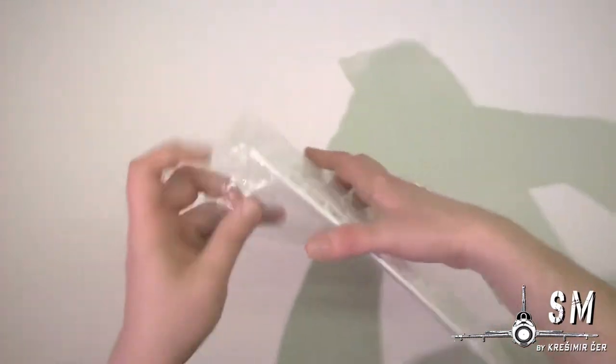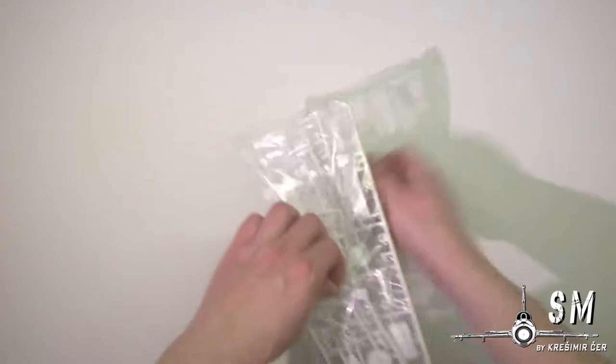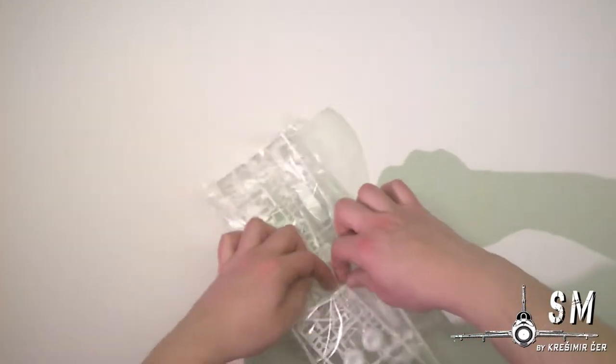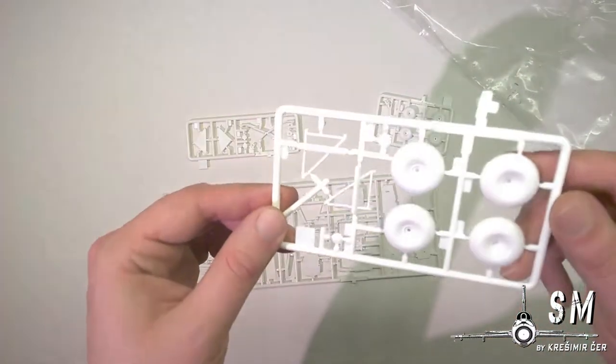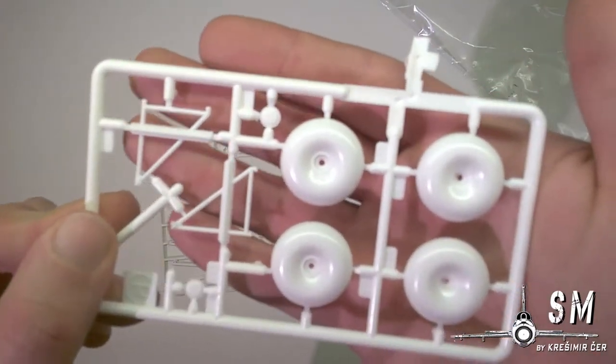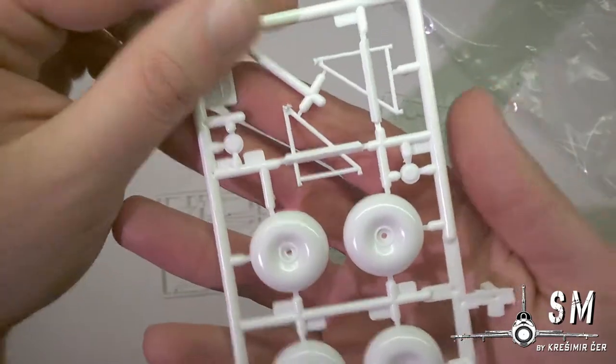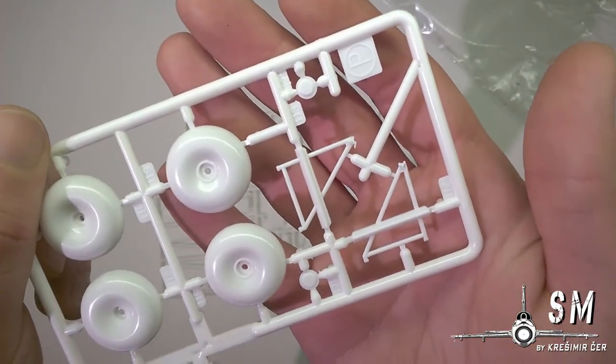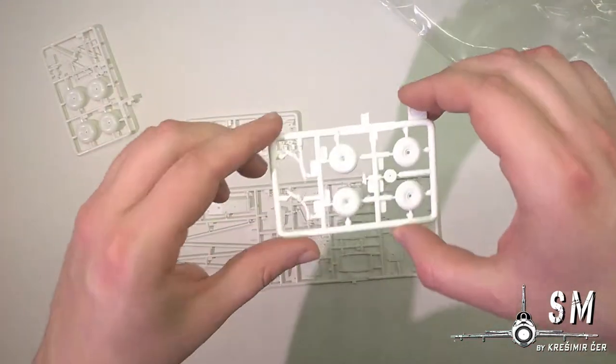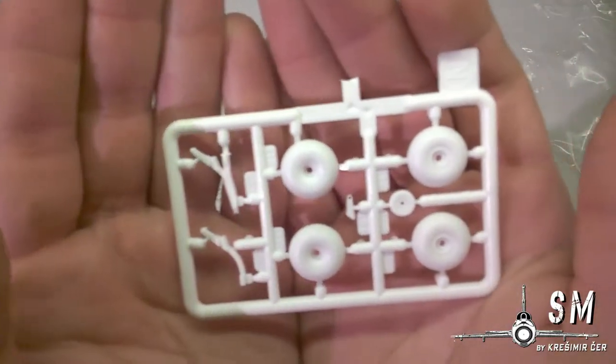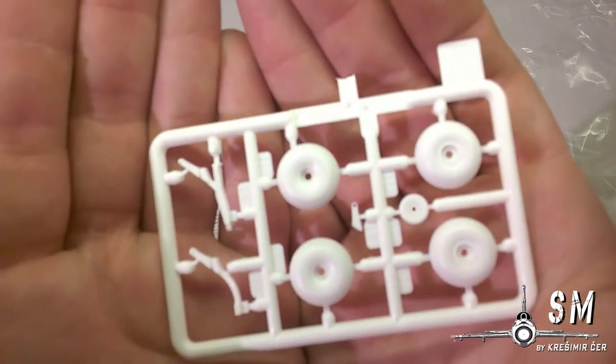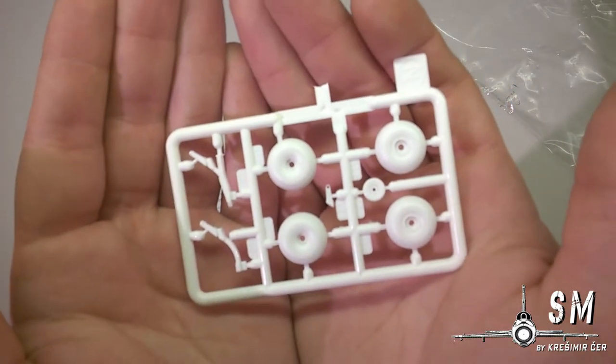So we have our bush wheels, huge wheels with tundra tires and wheel struts. But also we have some normal wheels, so we can build a normal Piper Cub.